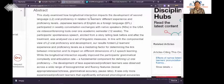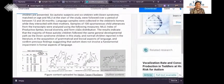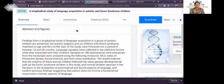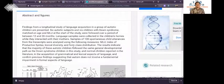Now let's go on to the second example. A longitudinal study of language acquisition in autistic and down syndrome children. Let's have a look at the abstract. Findings from the longitudinal study of language acquisition in group of autistic children are presented. Six autistic subjects and six children with down syndrome matched on age and MLU at the start of the study were followed over a period between 12 and 26 months. Language samples were collected in the children's home while they interacted with their mothers.